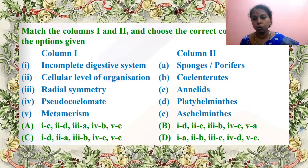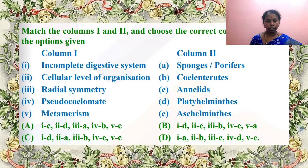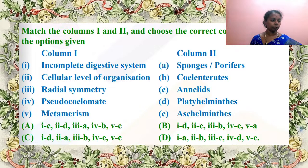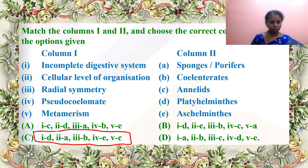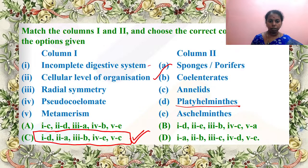Match column 1 and 2: incomplete digestive system — Platyhelminthes (as they are parasites); cellular level of organization — sponges; radial symmetry — coelenterates; pseudocoelomate — aschelminthes; metamerism — annelids. Answer is C — excellent answer by Aruni and Jeeva.